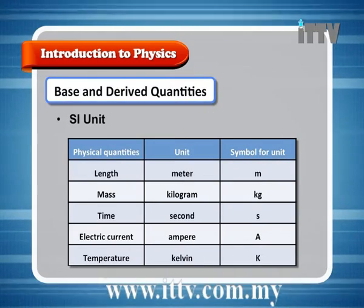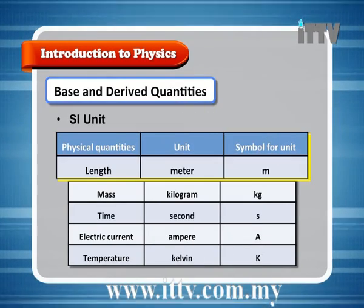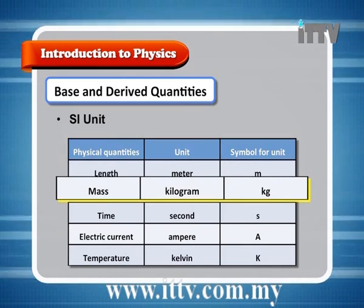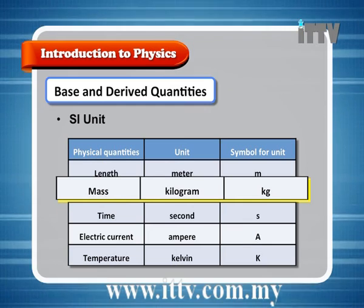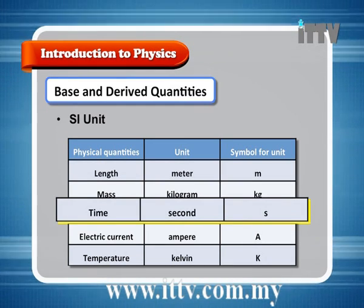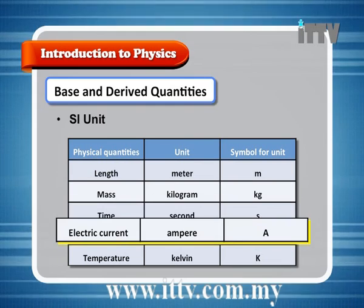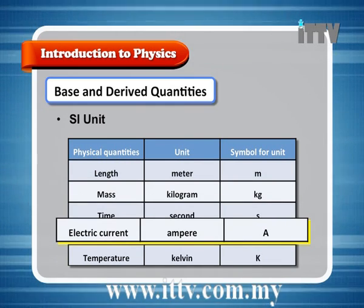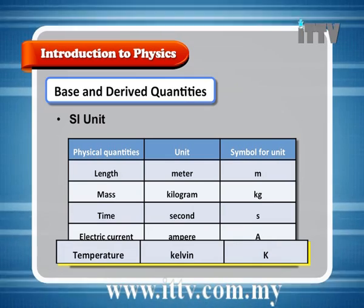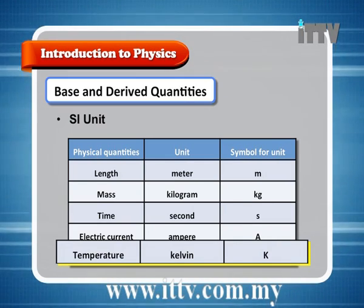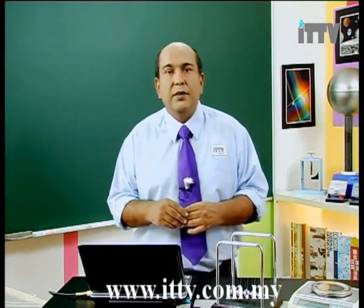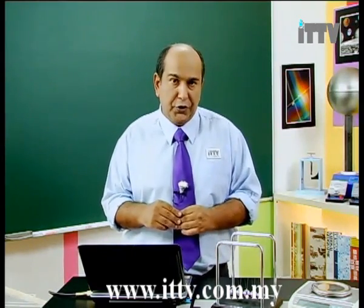The base units and their symbols are: length — metre, symbol m; mass — kilogram, symbol kg; time — seconds, symbol s; electric current — ampere, symbol A; and temperature — kelvin, symbol K. These are the standardized base units we are going to use.